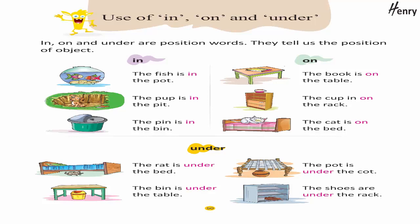Use of in, on, and under. In, on, and under are position words. They tell us the position of an object. In: The fish is in the pot. The pup is in the pit. The pin is in the bin. On: The book is on the table. The cup is on the rack. The cat is on the bed. Under: The rack is under the bed. The pot is under the cot. The bin is under the table. The shoes are under the rack.